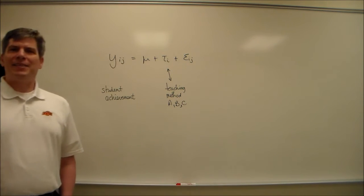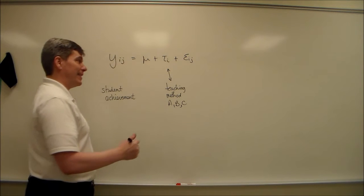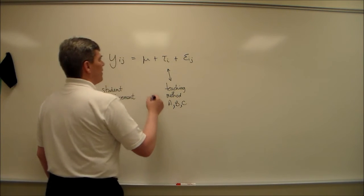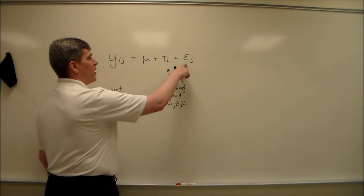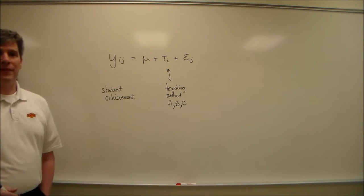Because I like doing things in three, let's say that there's a third method. We'll call that method C. This mu is the overall average. Same as always, this epsilon is going to be our unexplained variation.